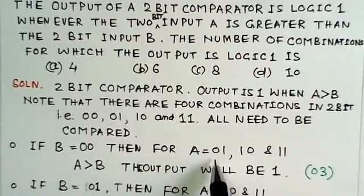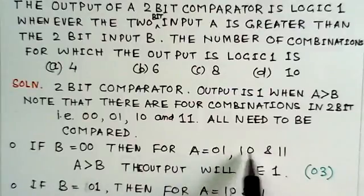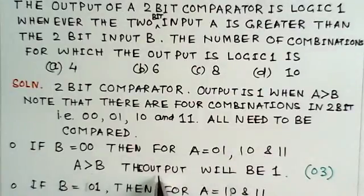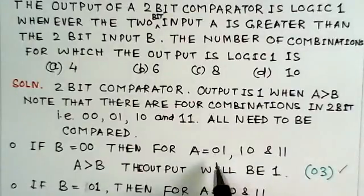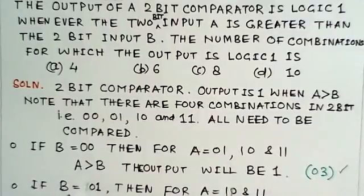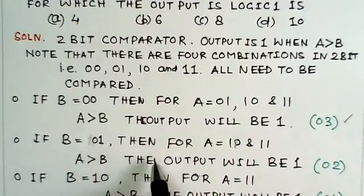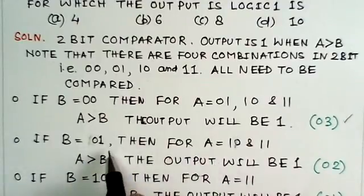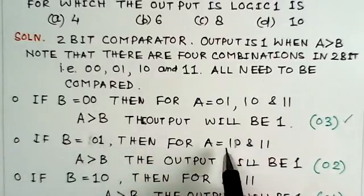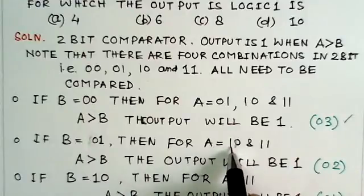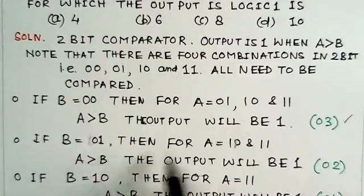That means A will be greater than B for these three combinations here. So A will be greater than B; the output will be 1. Now if B is 01, then you can notice 00 was less, 01 would be equal, so only for combinations of A which is 10 and 11 you will get A greater than B.